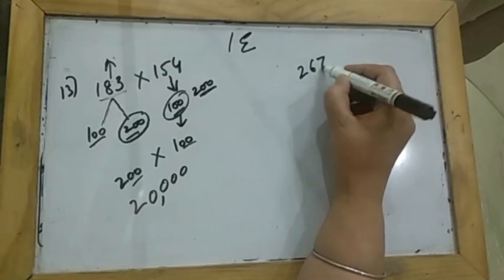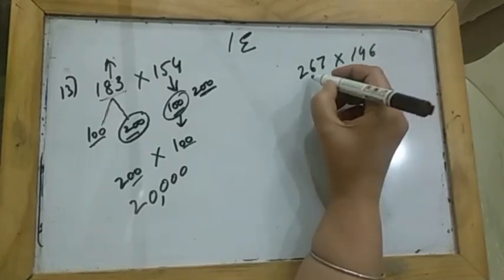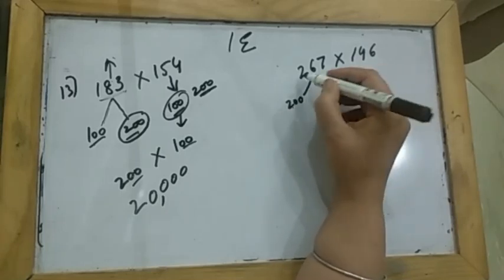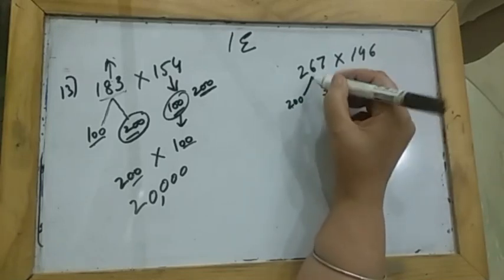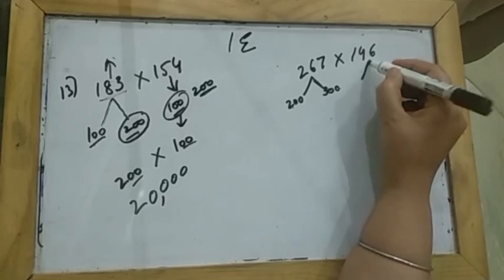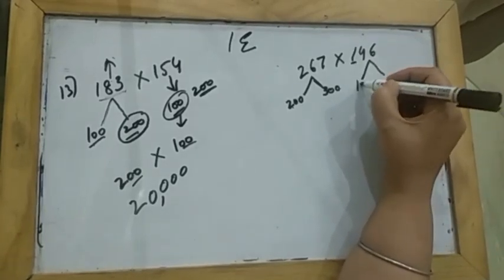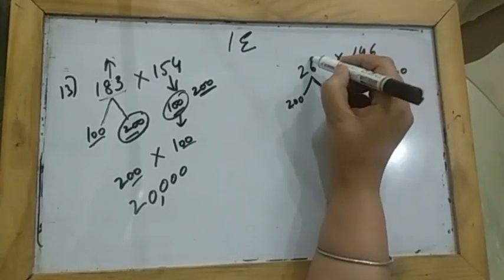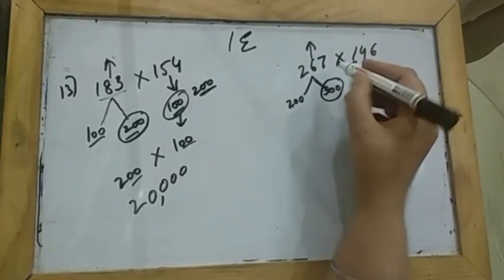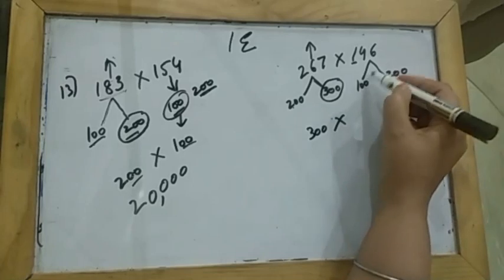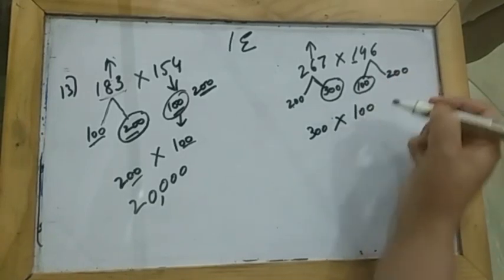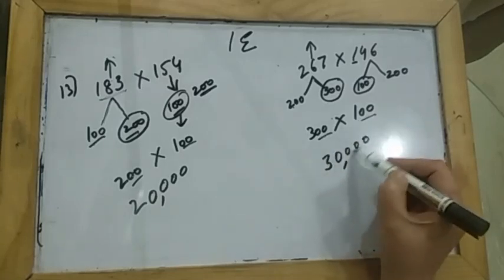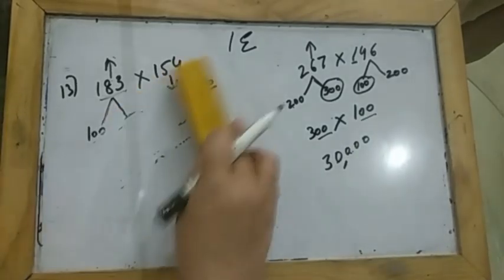Let me do one more example: 267 multiplied by 146. The number 267 lies between 200 and 300, and 146 lies between 100 and 200. Rounding the first number upward gives 300, and rounding the second number downward gives 100. When you multiply, the four zeros go into the answer and 3 ones are 3, so the answer is 30,000.